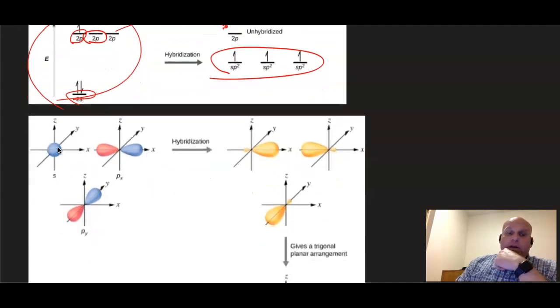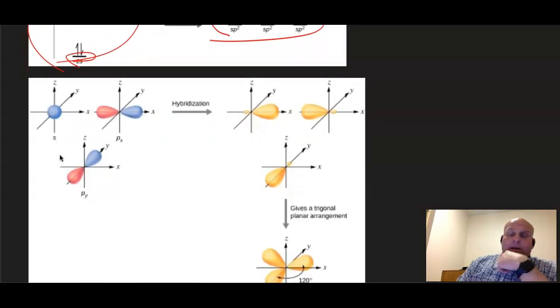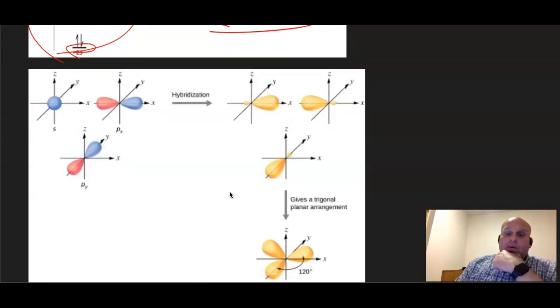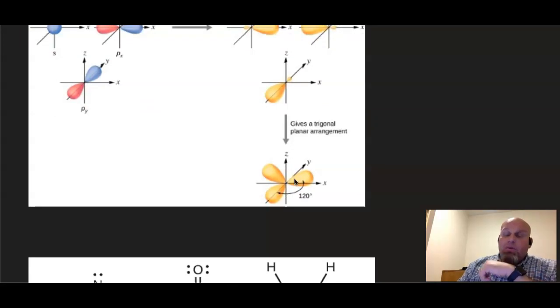So here is our one s and then our two p's. You see we have it on the x and the y. That turns into three hybrid orbitals, and if you see what that looks like when we put them together, the large nodes together, that's where we get that 120 degree bond angle for that molecular geometry.